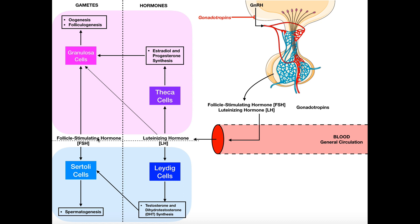The left side covers follicle-stimulating hormone and the right side covers luteinizing hormone — so you can guess that LH is going to be more important for hormone synthesis, whereas FSH is more important for gametogenesis, and that turns out to be true. In females, the relevant cell types are granulosa cells and theca cells. In males, they are Sertoli cells and Leydig cells.